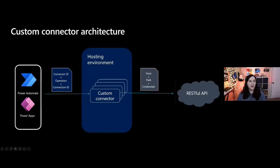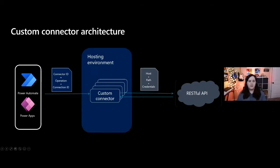The connector takes those credentials, sends them to your RESTful API with the host, path, and credentials. That RESTful API confirms access, takes the request — GET, POST, PUT, whatever — and returns the result back through the custom connector to your flow or application within Power Automate or Power Apps. Pretty simple and straightforward.